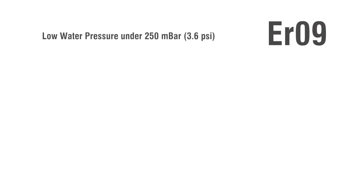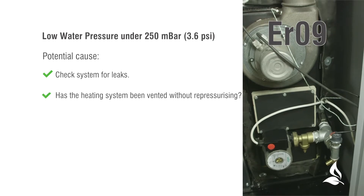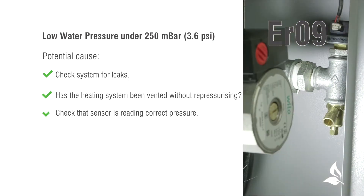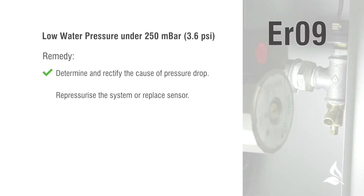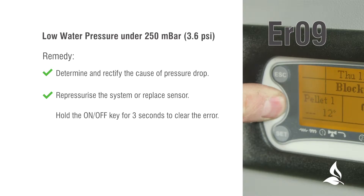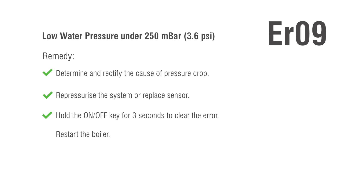ER09: Low water pressure under 250 millibar (3.6 PSI). Potential causes: check system for leaks; has the heating system been vented without repressurising? Check that the sensor is reading correct pressure. Remedy: determine and rectify the cause of the pressure drop, repressurise the system or replace the sensor. Hold the on-off key for 3 seconds to clear the error, then restart the boiler.